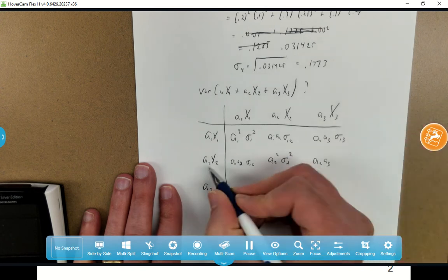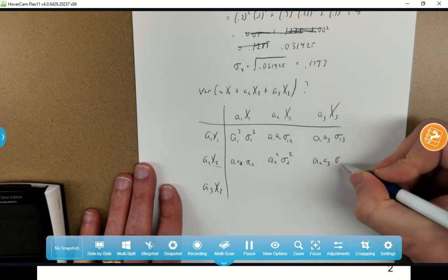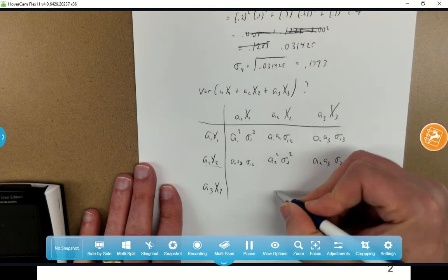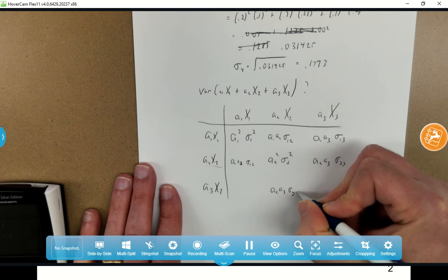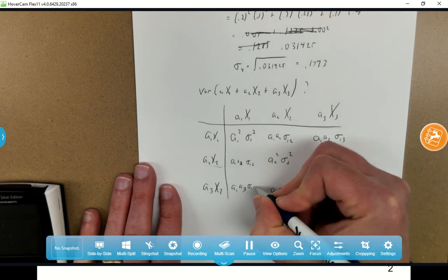A2 A3, this will be sigma 2,3. And by symmetry, A2 A3 sigma 2,3, and A1 A3 sigma 1,3.